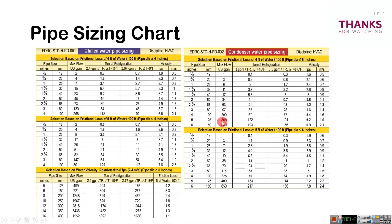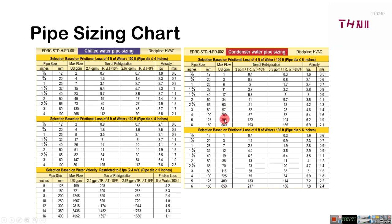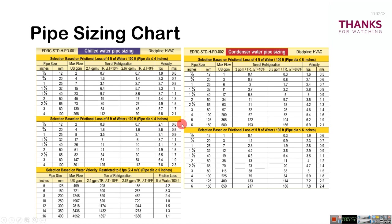The condenser water pipeline sizing chart is shown in red. For 300 GPM, the friction loss is high at 5 inch, so we get a 5-inch condenser water pipe size. However, since the most available pipe size in the market is 6 inch, we select 6 inch for the condenser side and 4 inch for the evaporator side.